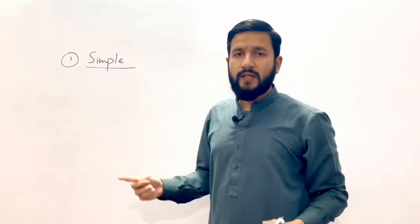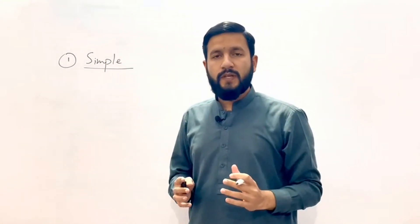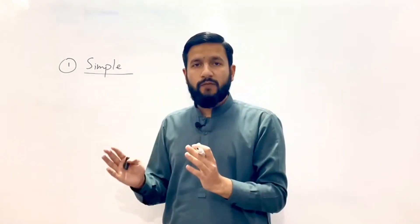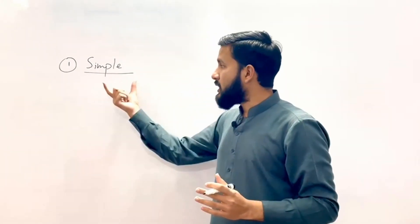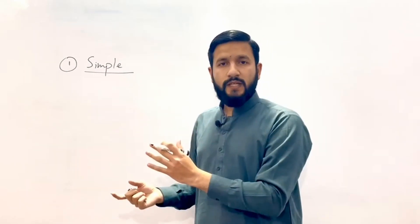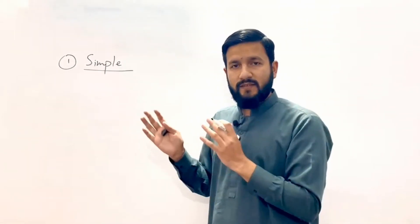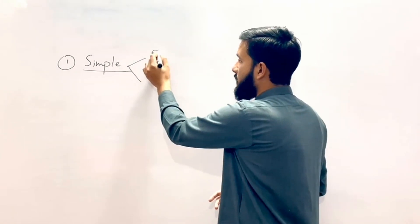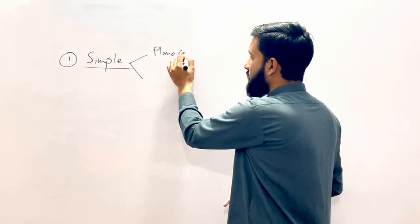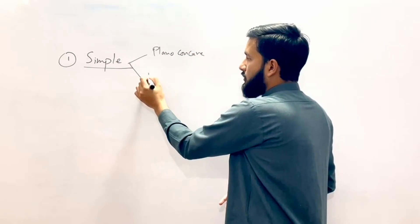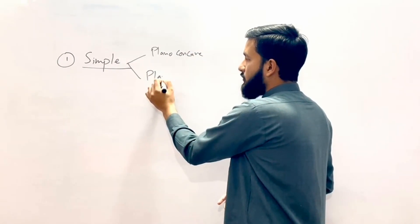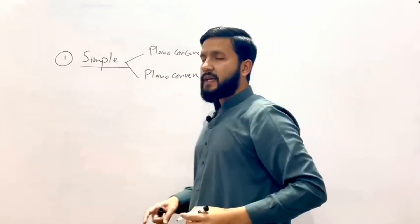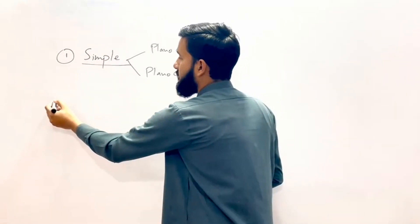In simple cylindrical lens, the curvature is present in one meridian only. That can be concave or convex, and we label it as plano-concave cylindrical lens or plano-convex cylindrical lens. So in simple we have two categories: plano-concave or plano-convex. The second category is compound cylindrical lens.